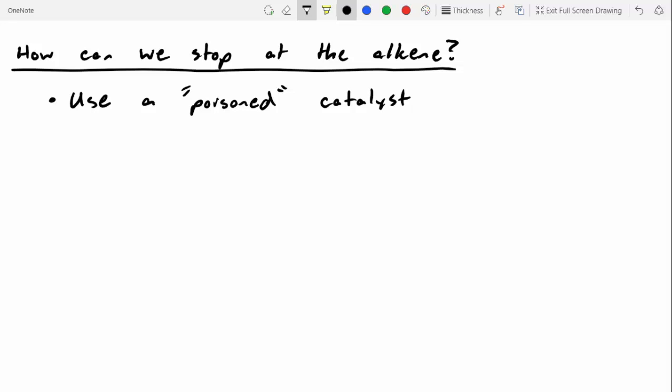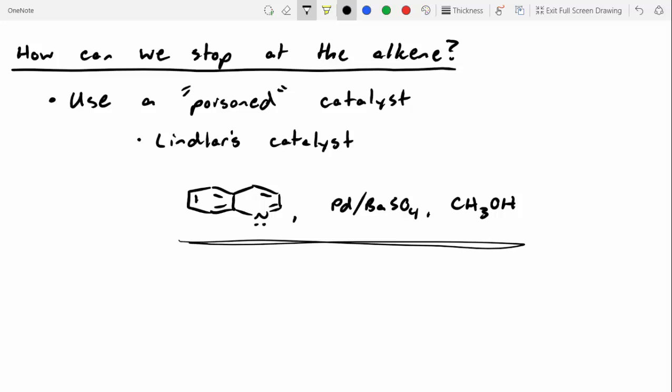So if we do want to stop at the alkene and recover it at a much higher yield, we have to trick our catalyst a little bit. And we trick our catalyst by using a poison catalyst. One that doesn't allow that hydrogenation to occur from the alkene to the alkane. The main one that we use is Lindlar's catalyst. And Lindlar's catalyst involves a heterocycle with two fused rings and it's aromatic. And then you also have this lead-barium sulfate mixture. And typically this is done in methanol. Good thing for you guys is I'm just going to refer to this as Lindlar's catalyst from now on. I won't expect you to draw all of the different reagents. But it's important to remember that Lindlar's catalyst is a mixture of all three of these things.